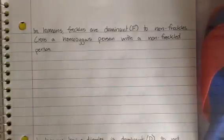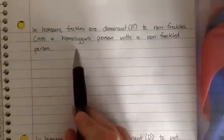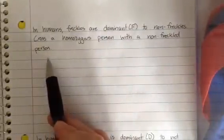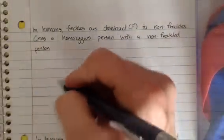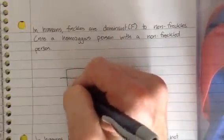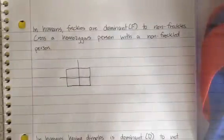So in humans, freckles are dominant, which we signal by big F, to non-freckles. That'd be a small F. It says to cross a homozygous person with a non-freckled person. Now the first step is to draw a Punnett square. Hopefully you remember what these look like from seventh grade. Looks something like this. That's a Punnett square.